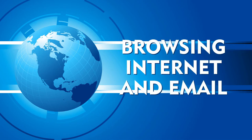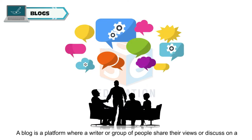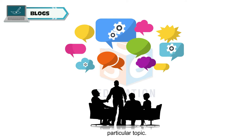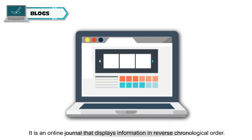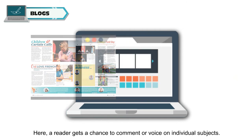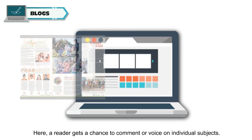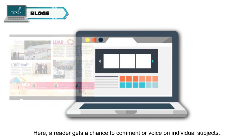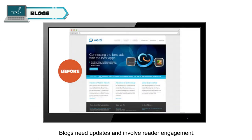Browsing Internet and Email. A blog is a platform where a writer or a group of people share their views or discuss a particular topic. It is an online journal that displays information in reverse chronological order. A reader gets a chance to comment or voice on individual subjects. Blogs need updates and involve reader engagement.